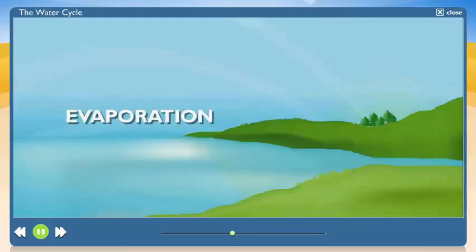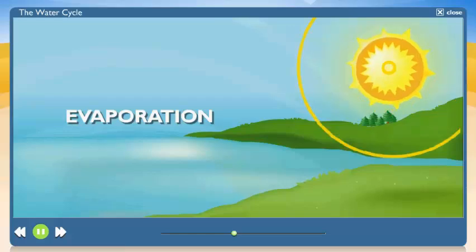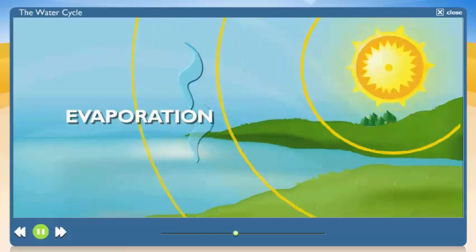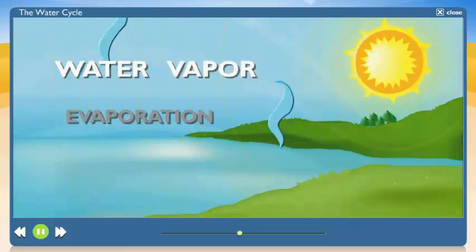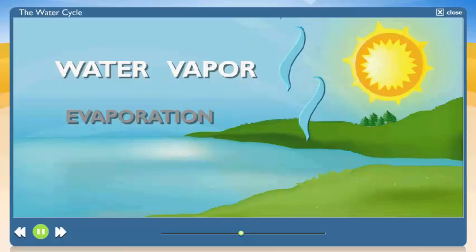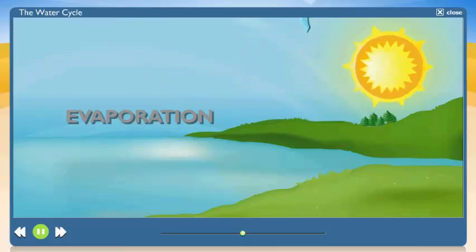Through evaporation. When water gets warmed by the sun, it changes from a liquid into an invisible gas called water vapor. Invisible? What? The water's still in the air, but you can't see it because it's a gas. I'd call that disappearing.